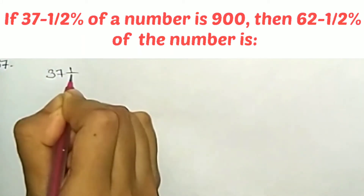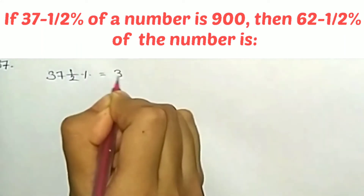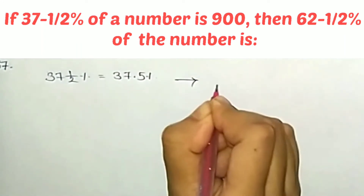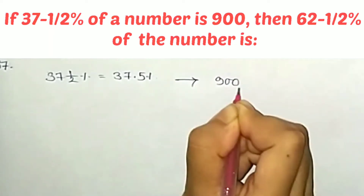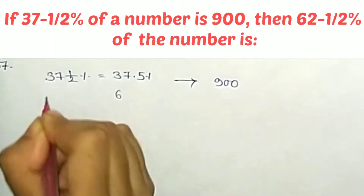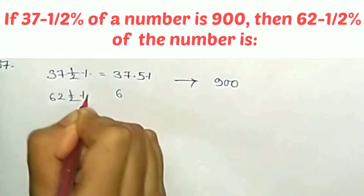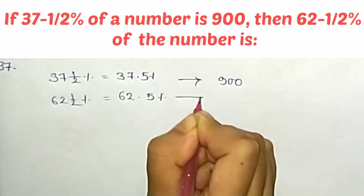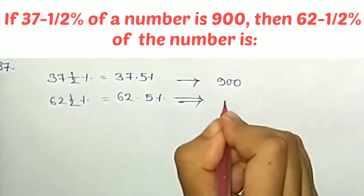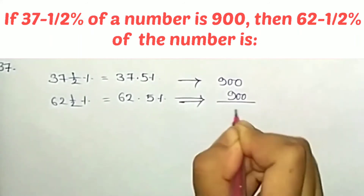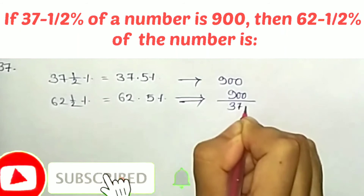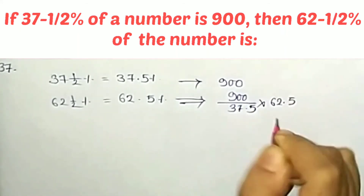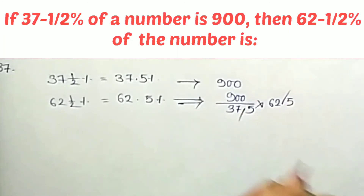So the number times 37.5% is equal to 900. The number times 62.5% equals 62.5% of the number, which is equal to 900 divided by 37.5, multiplied by 62.5. So the number cancels and we get the answer.